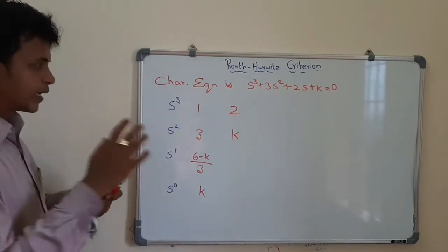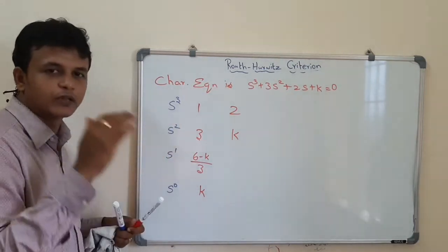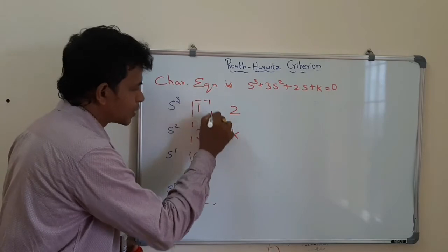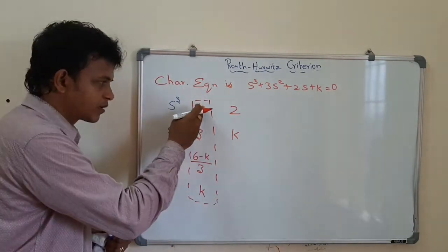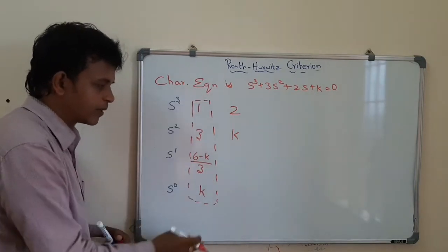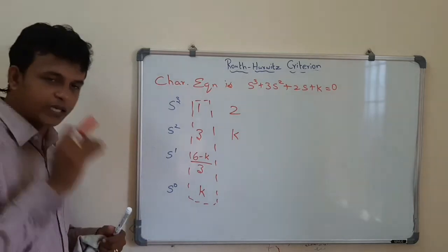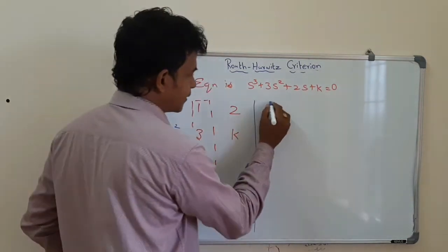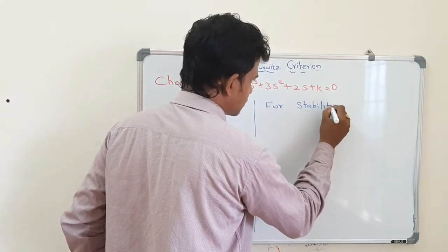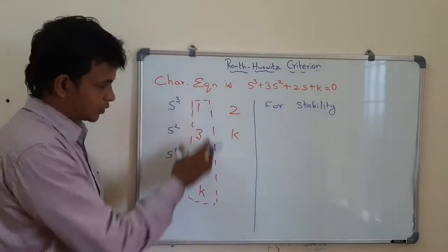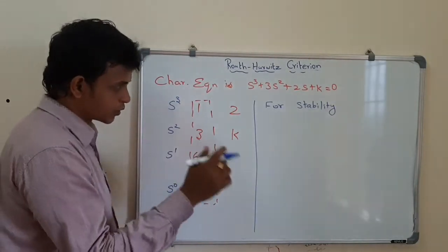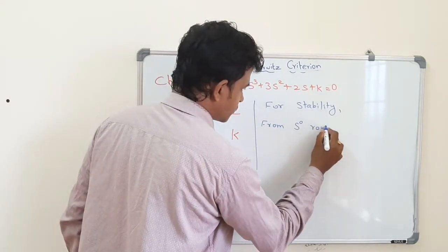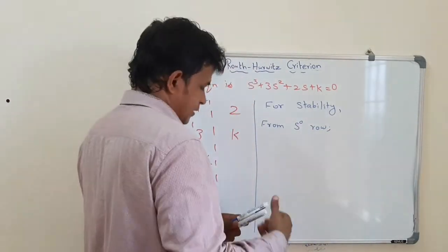Now the condition is stability. We need to maintain all roots in the left half plane, so all elements in the first column of the Routh array must be positive. The first element is positive, and for stability all elements of column 1 should be positive. From the s⁰ row, k should be greater than 0.